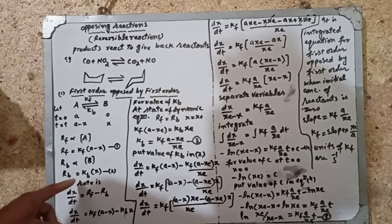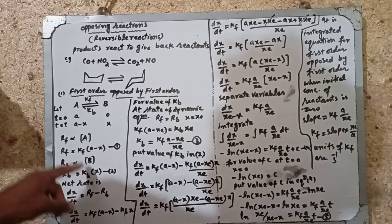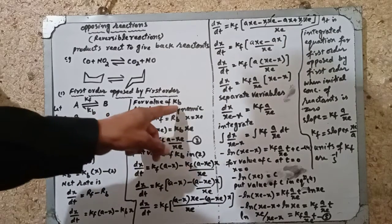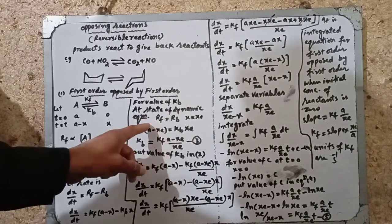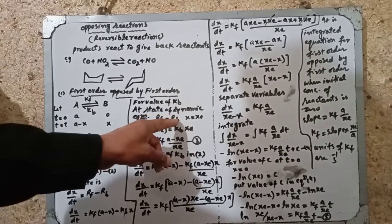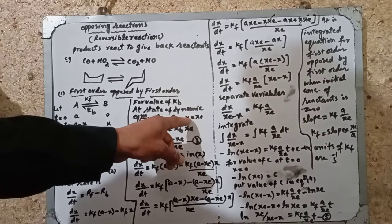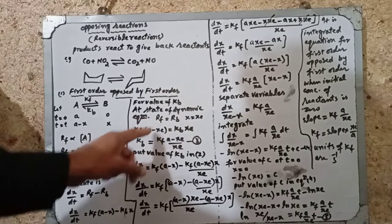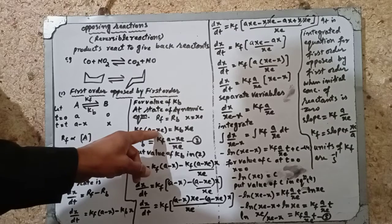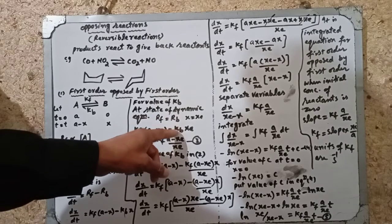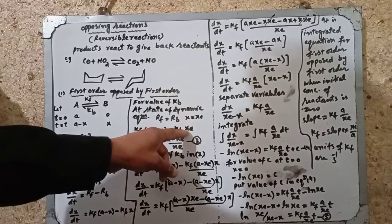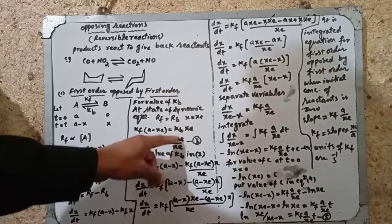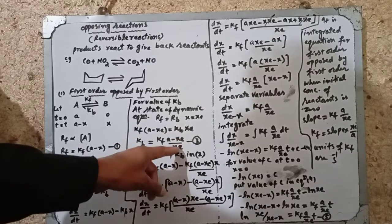At equilibrium, the rate of forward equals the rate of backward, and x equals xe. Therefore: kf(a minus xe) equals kb·xe. Solving for kb, we get kb equals kf(a minus xe) divided by xe.